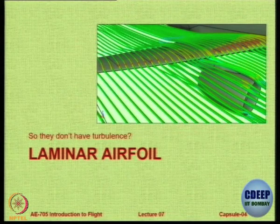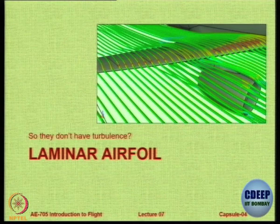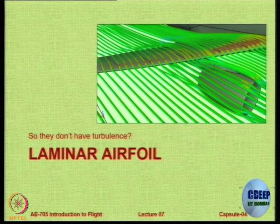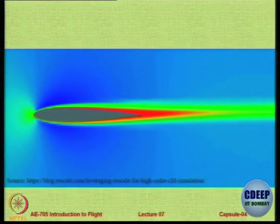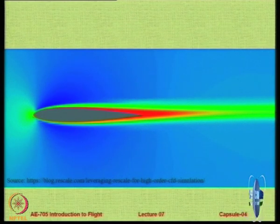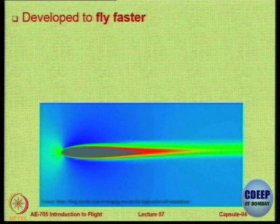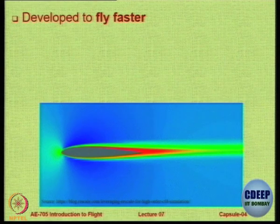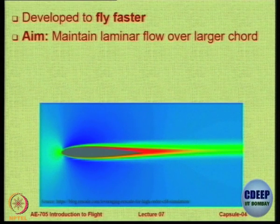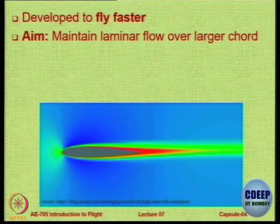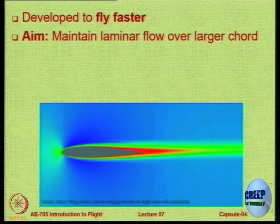Now we look at a certain class of aerofoils which are very special. One of them is called a laminar flow aerofoil, or more precisely a Natural Laminar Flow (NLF) aerofoil. Here is a CFD simulation showing the flow is pretty much undisturbed. These laminar flow aerofoils were developed in an attempt to make planes fly faster, with the aim of pushing the transition to turbulent flow further back by avoiding adverse pressure gradient and maintaining laminar flow over a large portion.